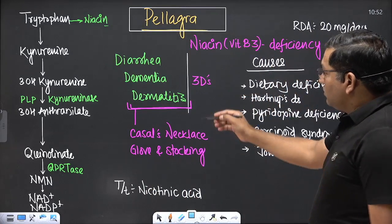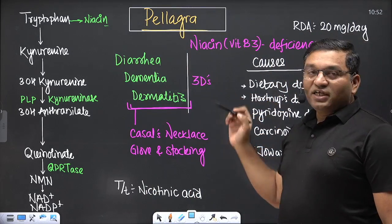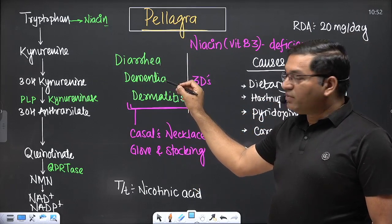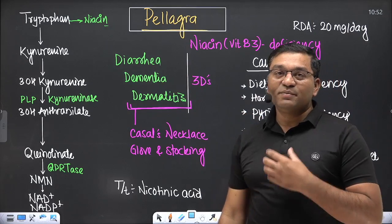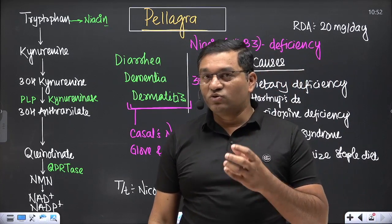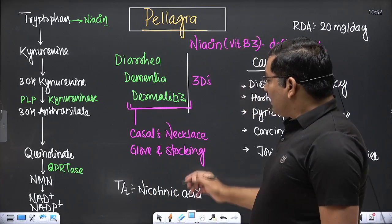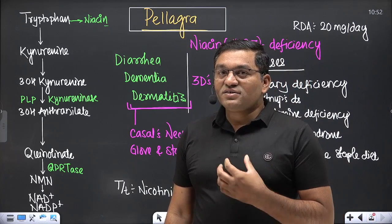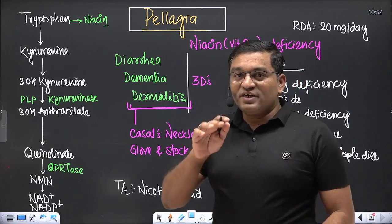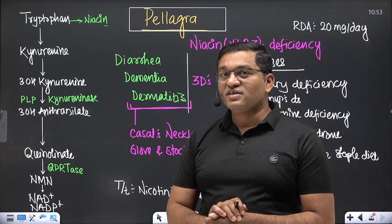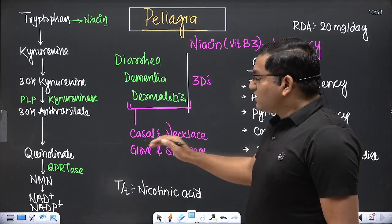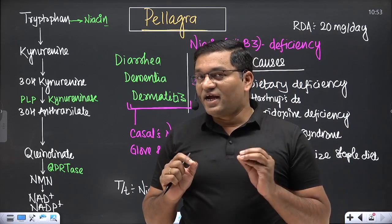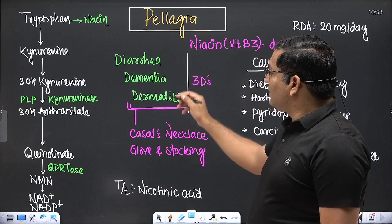In pellagra: diarrhea means frequent stools; dementia means memory loss; and dermatitis typically involves sun-exposed parts of the body. The rash is erythematous — a red, reddish rash — and it is clearly demarcated from the surrounding skin. It presents as Casal's necklace or glove-and-stocking appearance of the hands and feet.